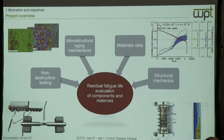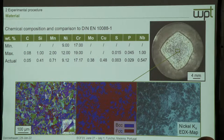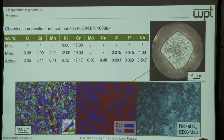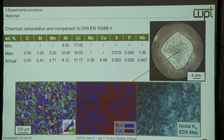At a later stage we will transfer this onto actual components, and for this we will be able to do component testing. The results shown today are all from specimens from bar material. The chemical composition is given in the table — the nickel content is quite low, and it's also a niobium-alloyed grade. The niobium has high affinity to carbon, so the carbon does not stay in the matrix.